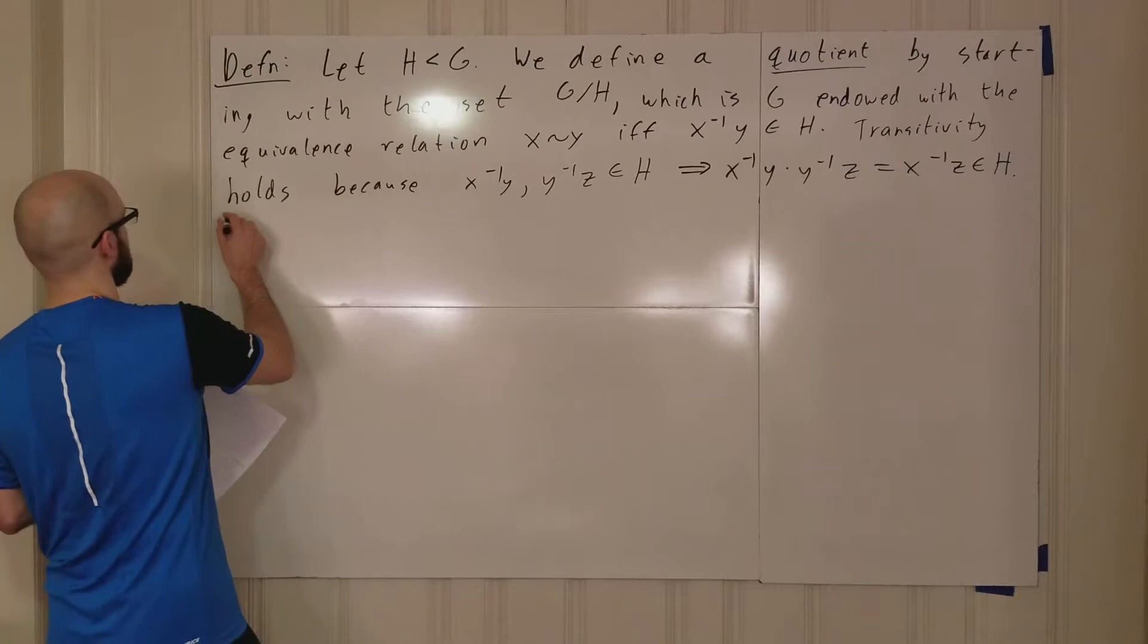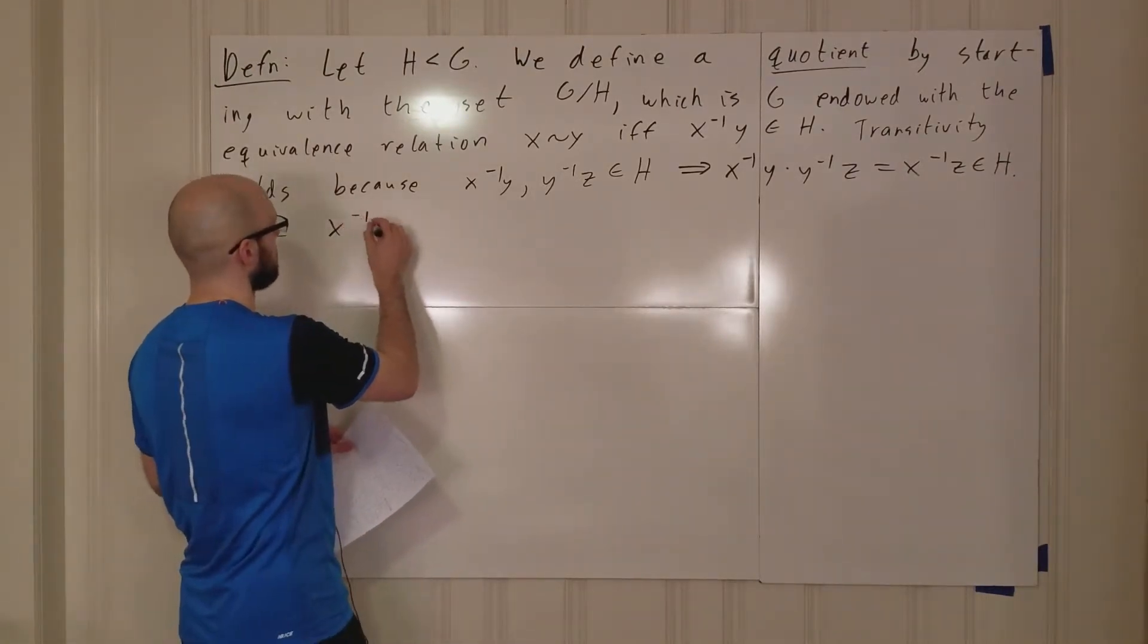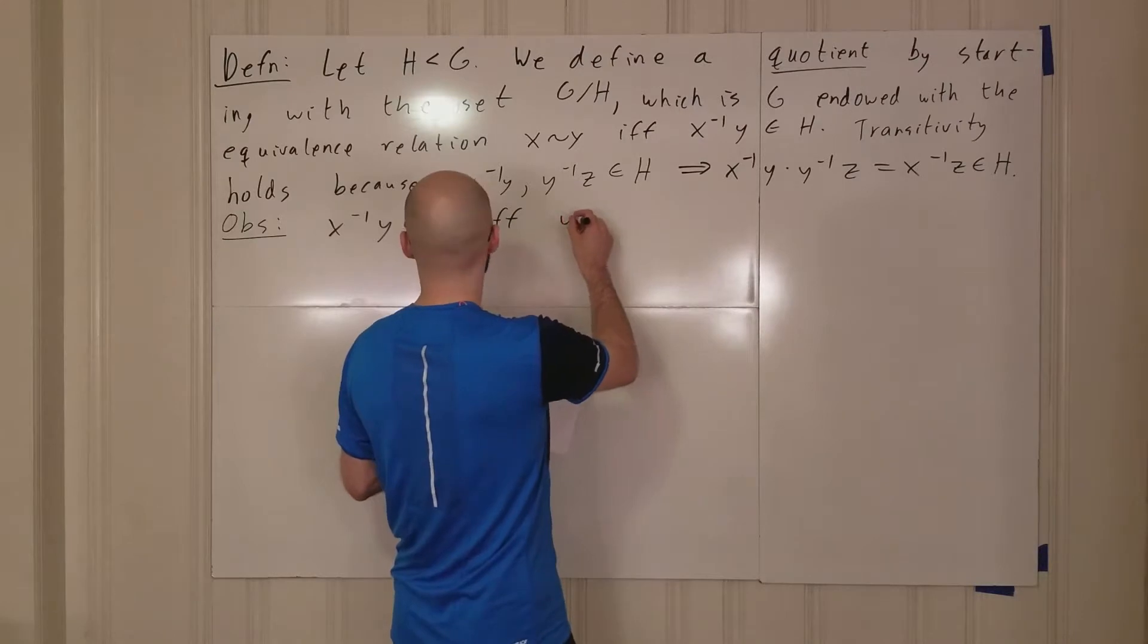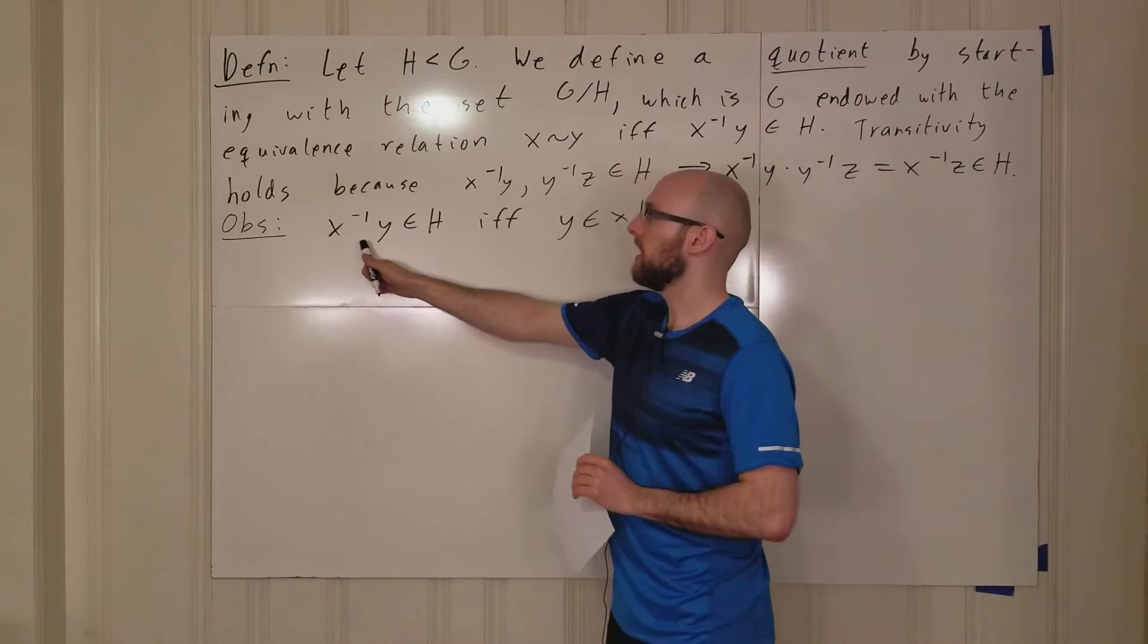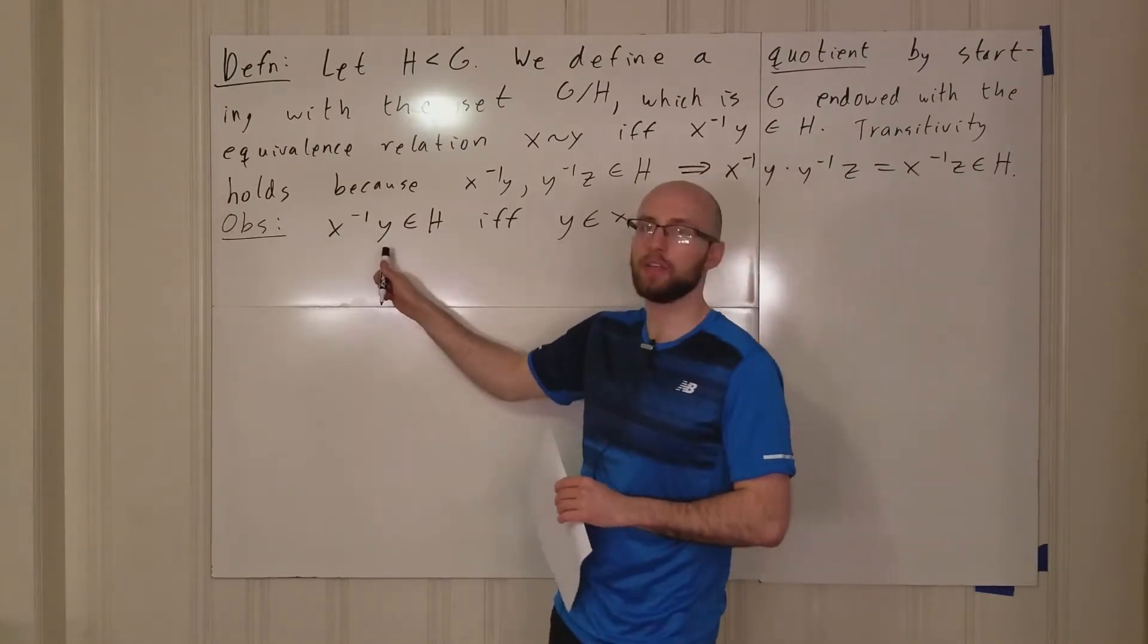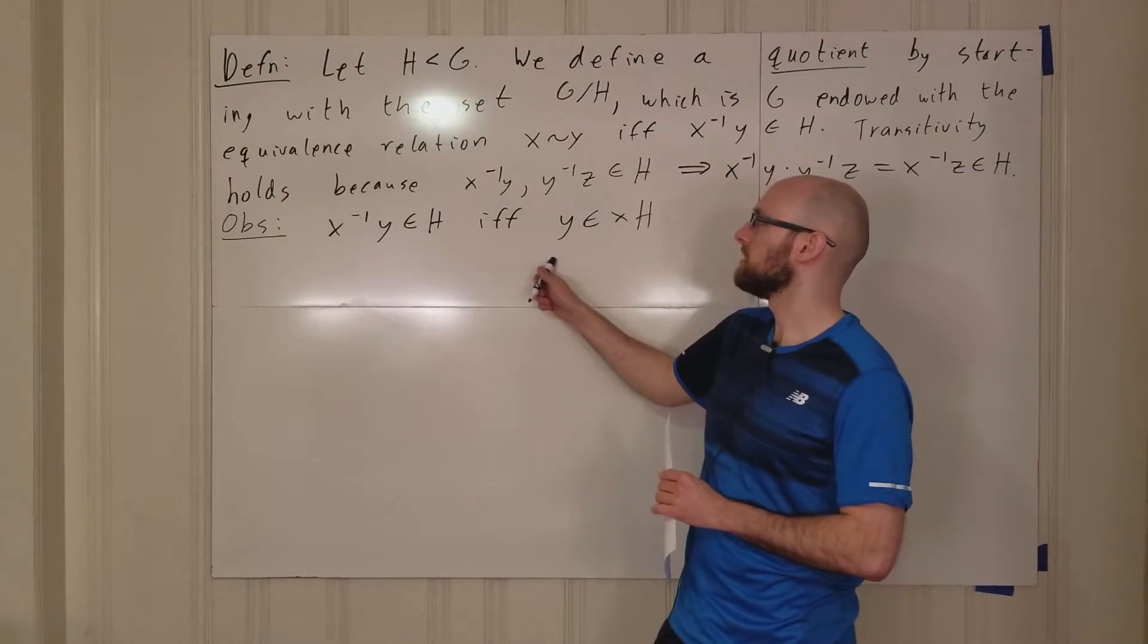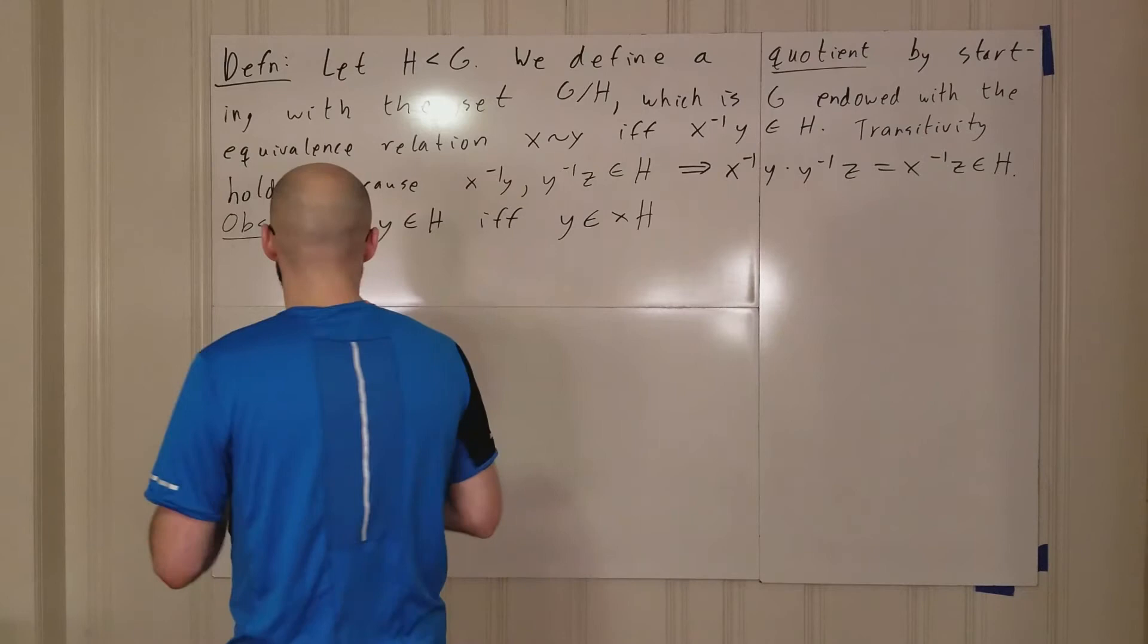Instead of calling this a definition, I'm going to write this as an observation. Observe that x inverse y is in H if and only if y is in xH. This is because if x inverse y is in H, that means x inverse y equals h for some little h in big H, and that means that y is equal to x times h, which means that y is in x times big H.